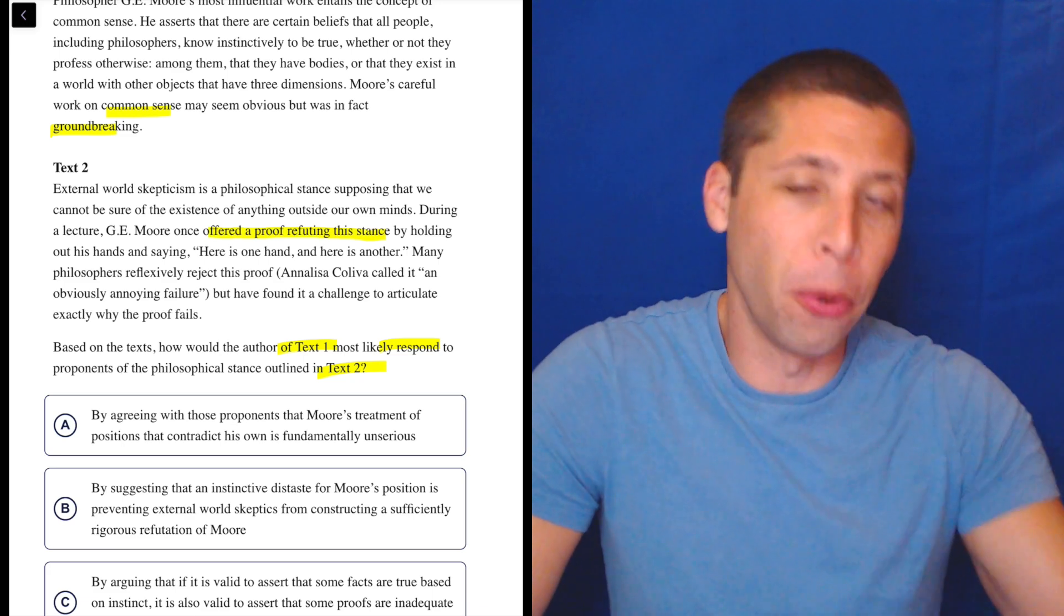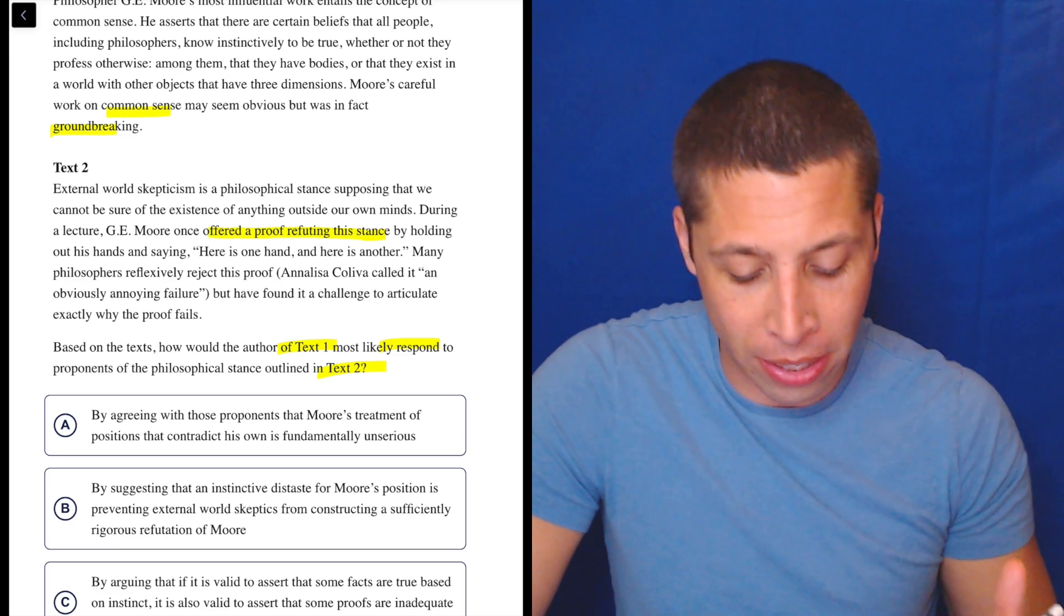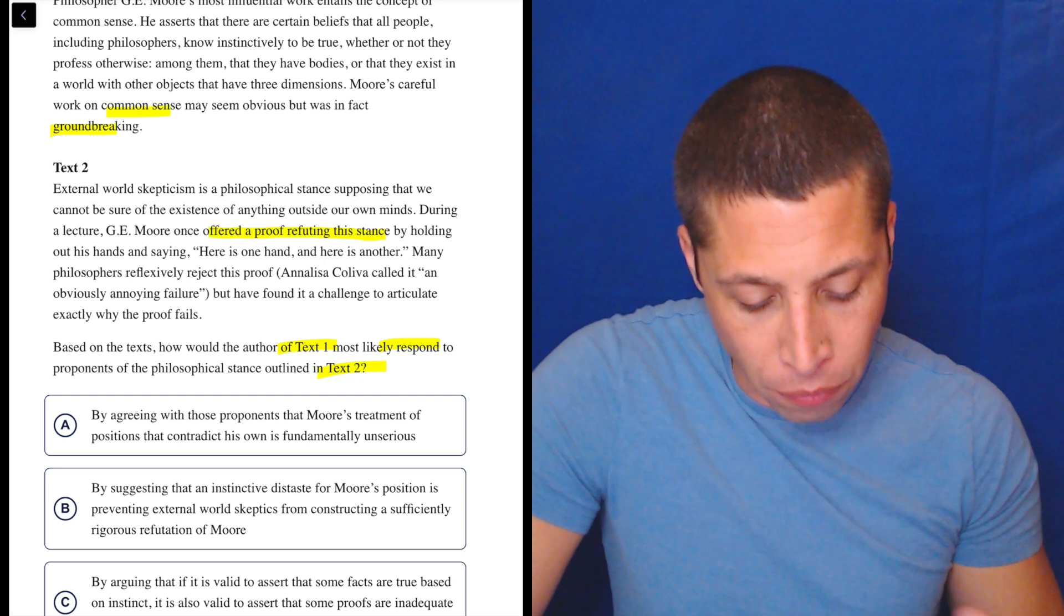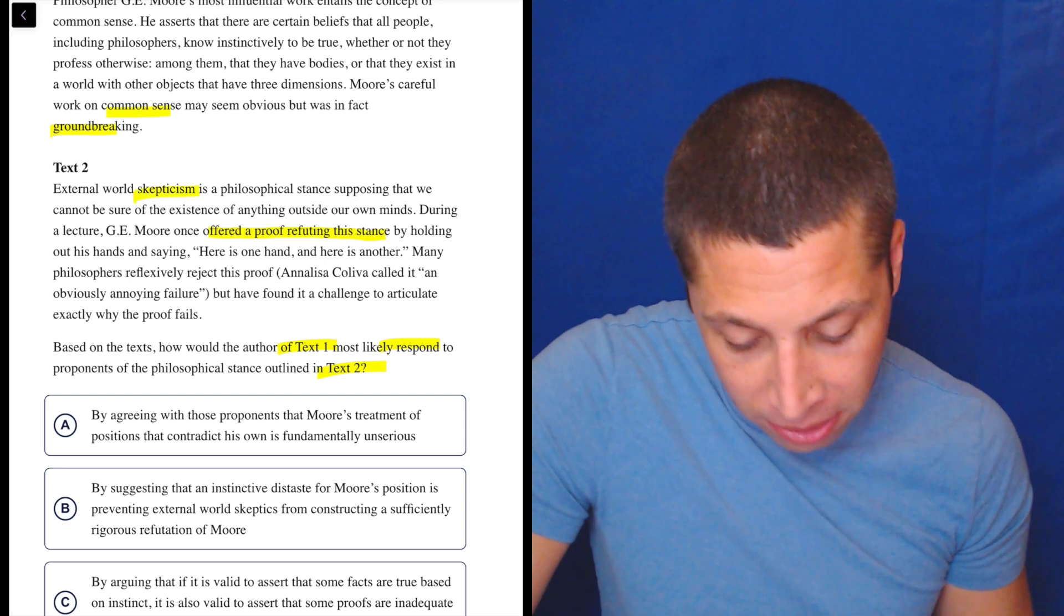So you might have done proofs in your geometry class when you did congruent triangles and things like that. It's an argument. So proof maybe here, the best synonym would be argument. So he offered an argument refuting the stance of whatever this skepticism is.